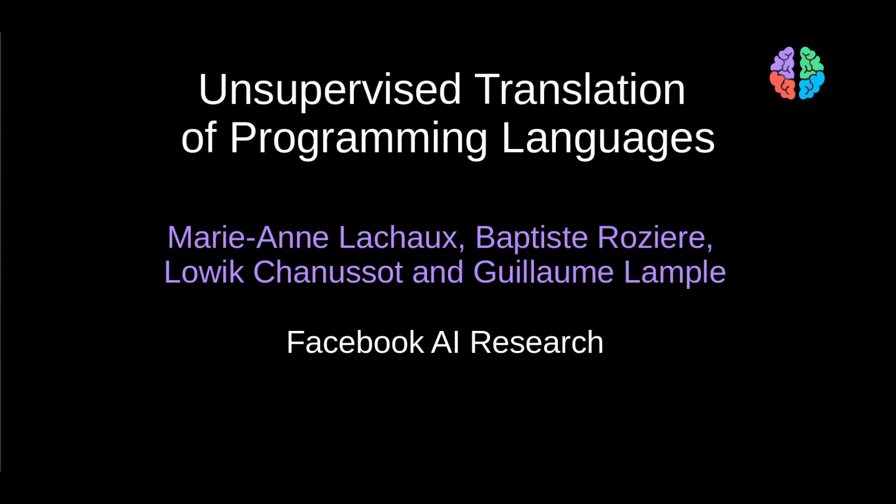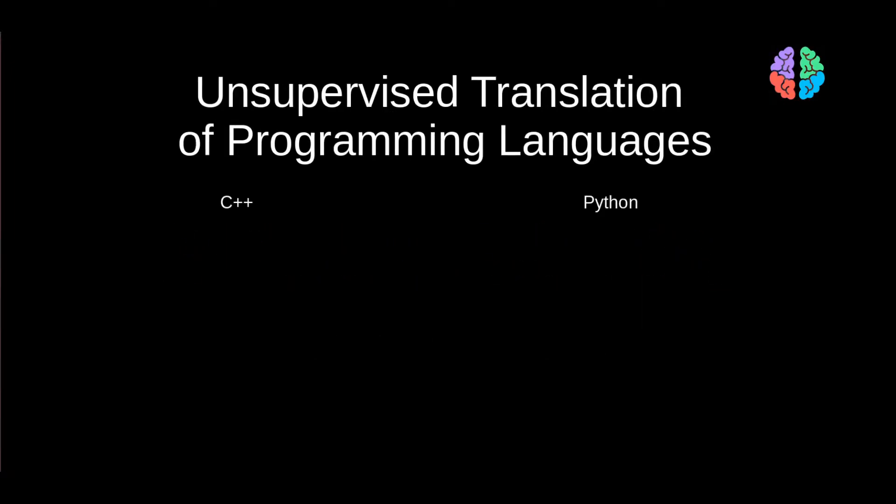By now, we all have seen AI-generated images of faces and cars. We're also quite familiar with language translation, from English to French or English to Spanish. But can we translate programming languages? Can we translate C++ to Python or Python to Java or Java to C++?